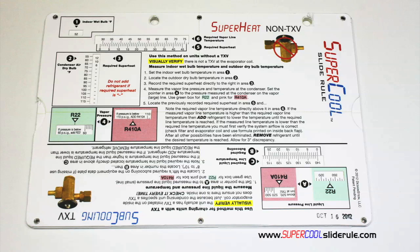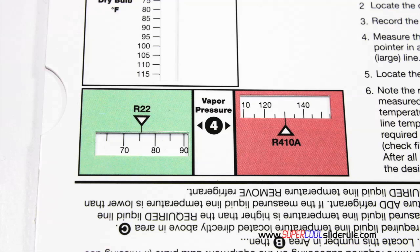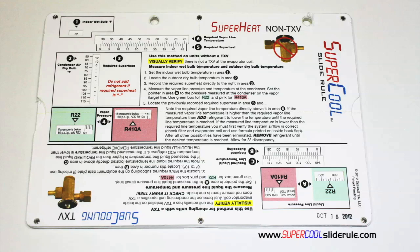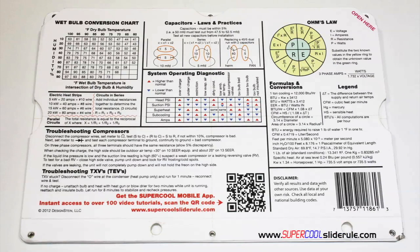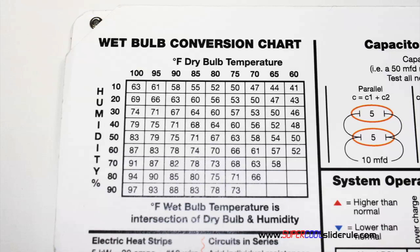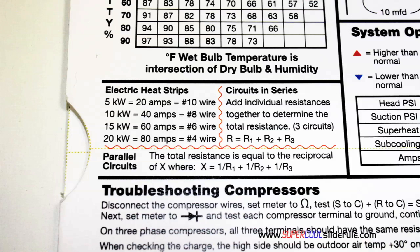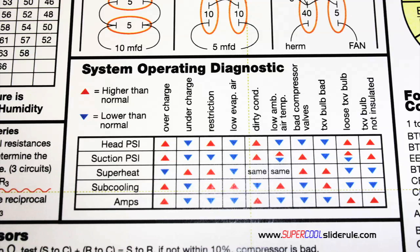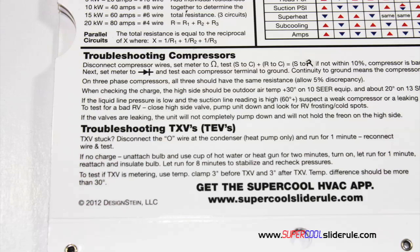This one tool will allow you to charge a system with R22 or R410A in either the superheat or subcooling method. The back cover contains required formulas, capacitor rules and practices, a wet bulb conversion chart, how to perform computations on series or parallel circuits, an electric heat strip guide, a complete system troubleshooting diagnostic chart, and how to troubleshoot compressors and TXV.